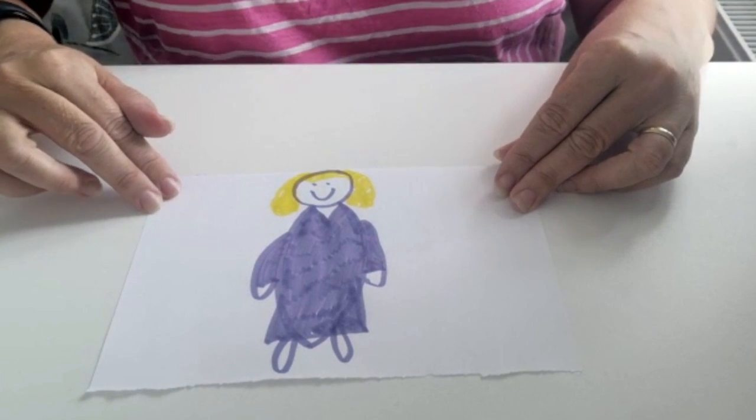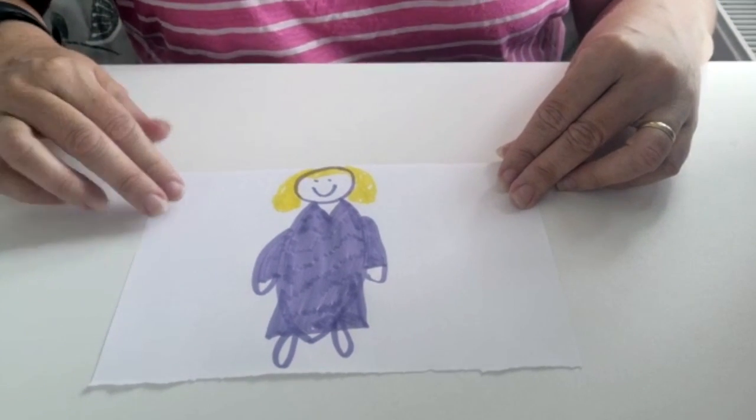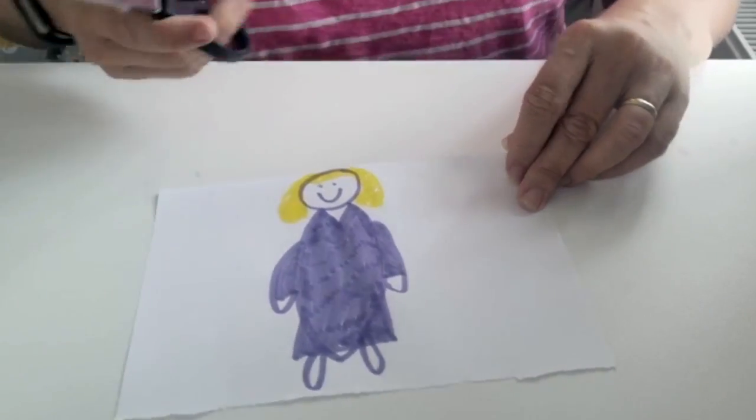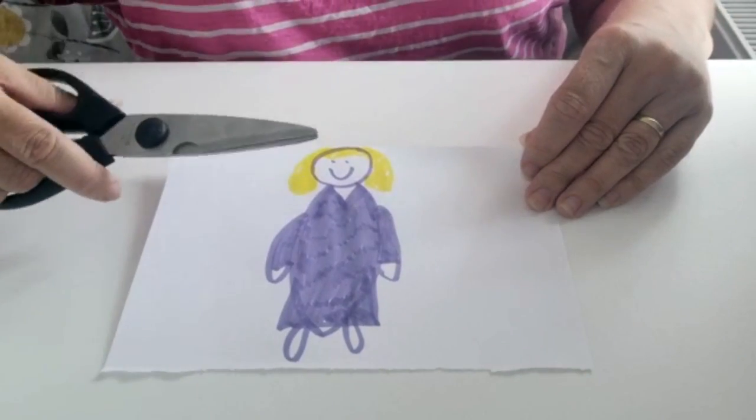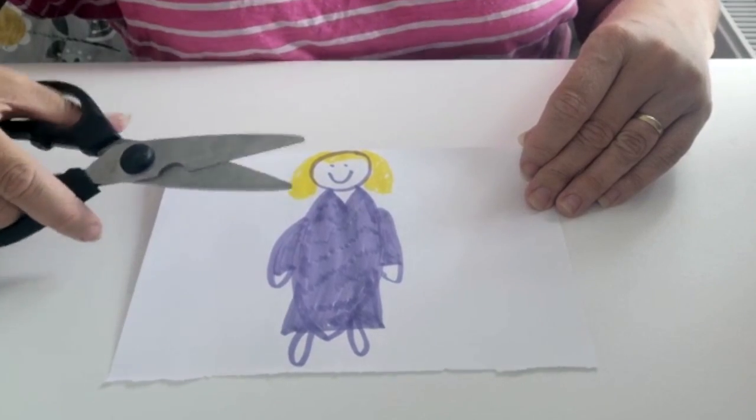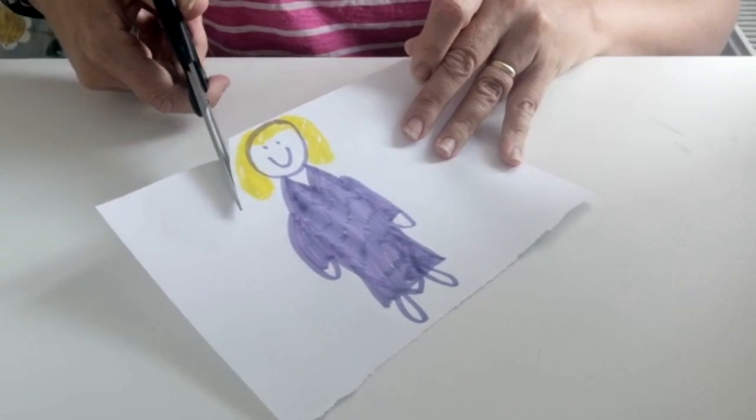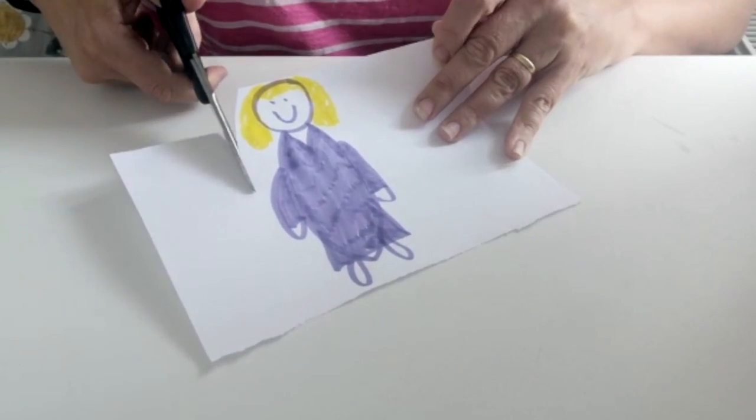I'm just going to show you what to do once you've done your beautiful drawings of today's characters. You're going to need a pair of scissors. Maybe you can get an adult to do this, or you can have a go. Just cut around the head, maybe halfway down the body.